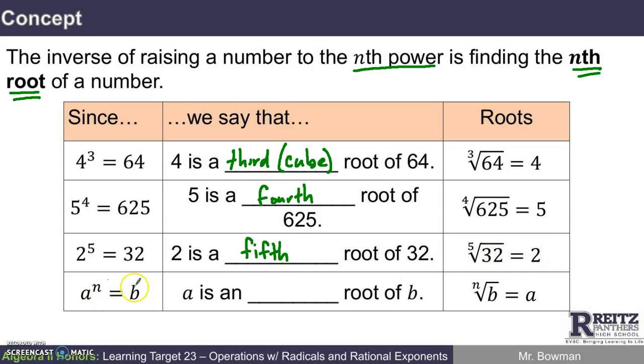Here is the same idea, very abstract. Since a to the nth power, or I guess I should say if a to the nth power equals b, we would say that a is an nth root of b. So for any n we pick, if a to the n power is b, then a is an nth root of b. Or we could say that the nth root of b is a.